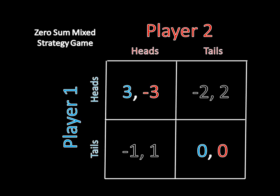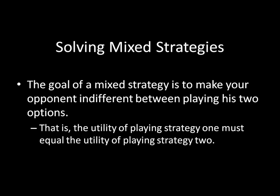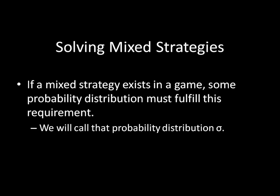That's why we have the mixed strategy algorithm. Let's review the ground rules first. If no equilibrium exists in pure strategies, then one must exist in mixed strategies. And if the game is a 2x2 matrix as it is here, each player's mixed strategy must make the other player indifferent between his two pure strategies. In other words, a mixed strategy must make the utility of playing one pure strategy equal to the utility of playing the other pure strategy. And if a mixed strategy exists in a game, then some probability distribution must fulfill this requirement for it to be in equilibrium. We will call this assumed mixed strategy a sigma.